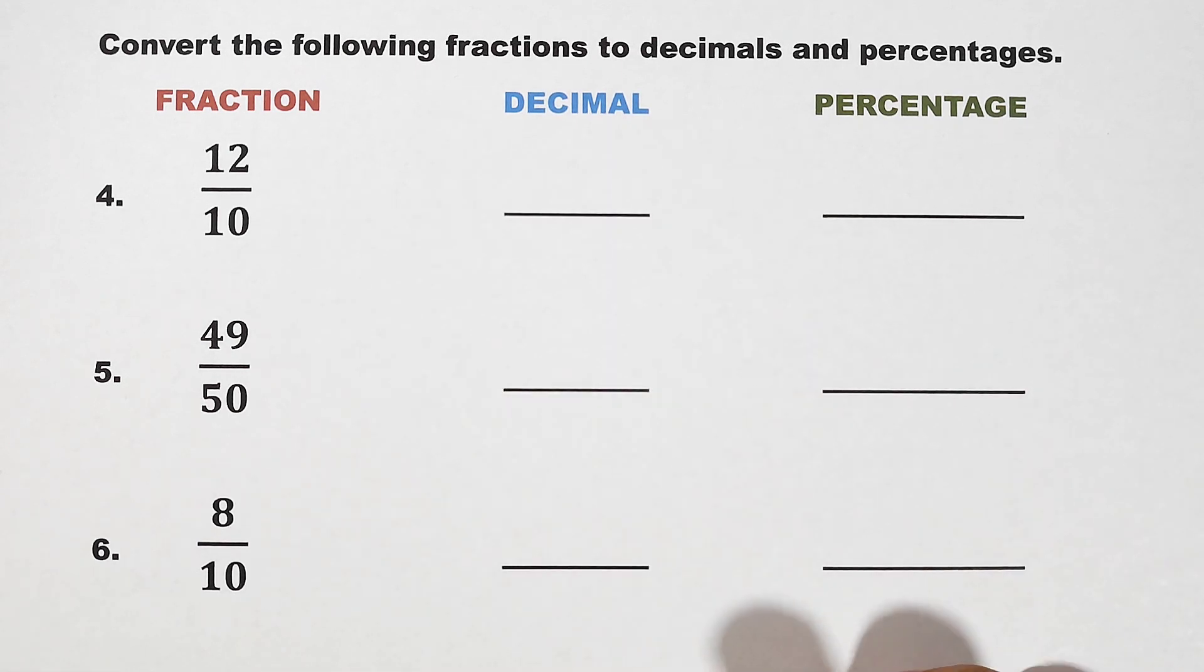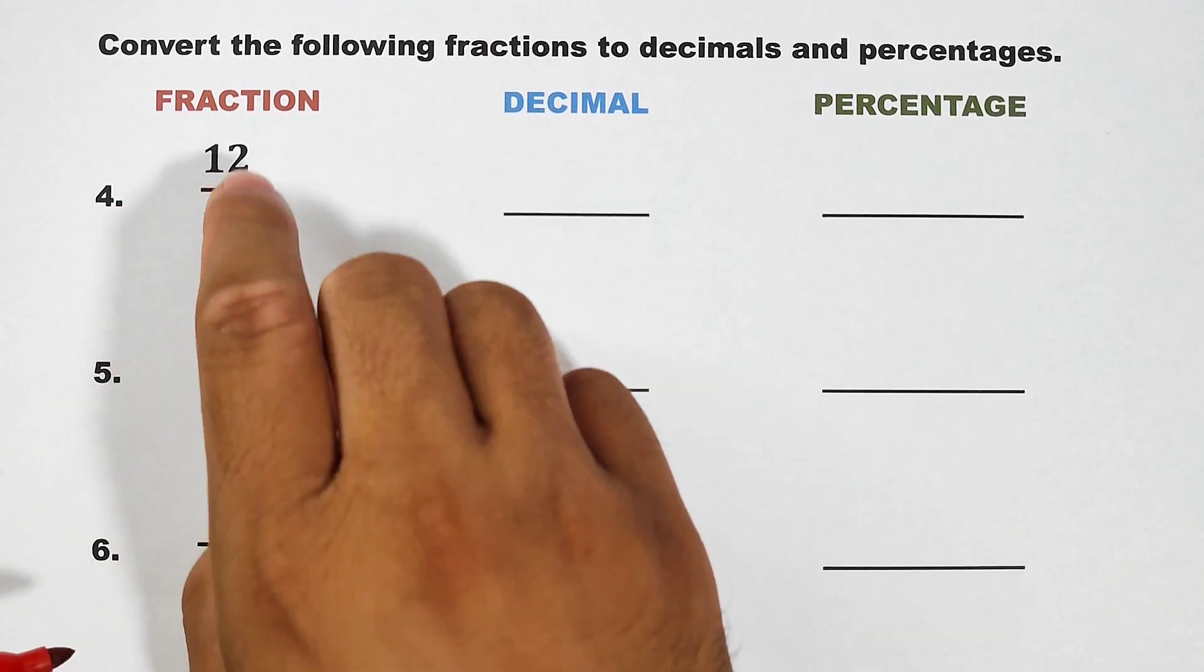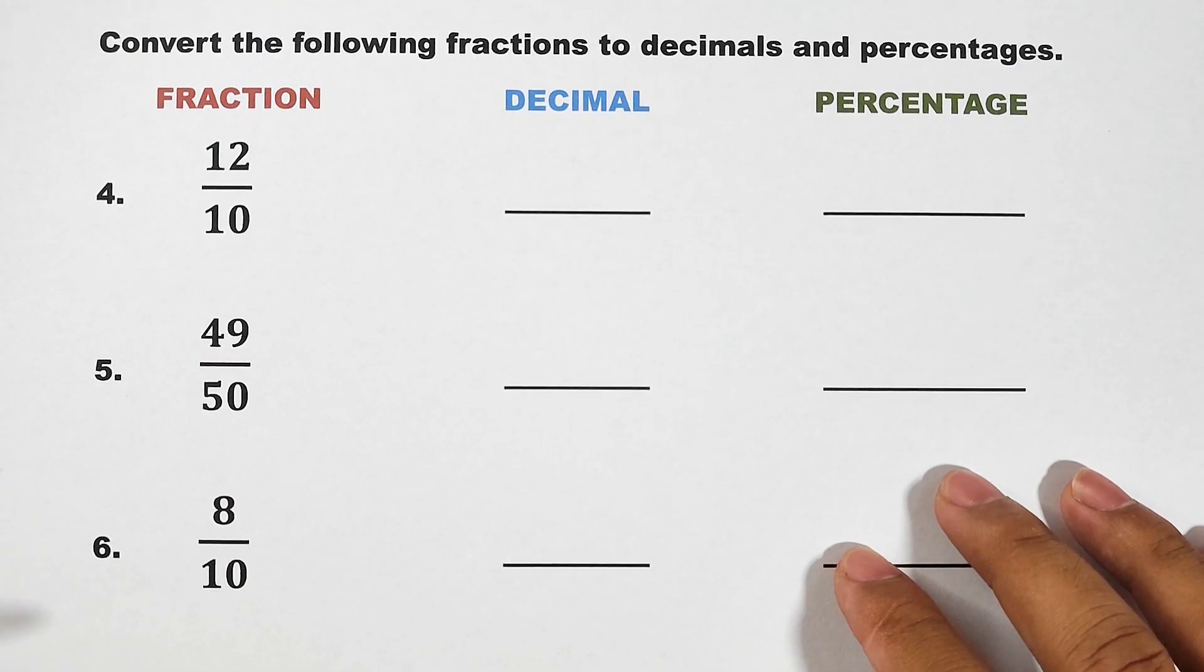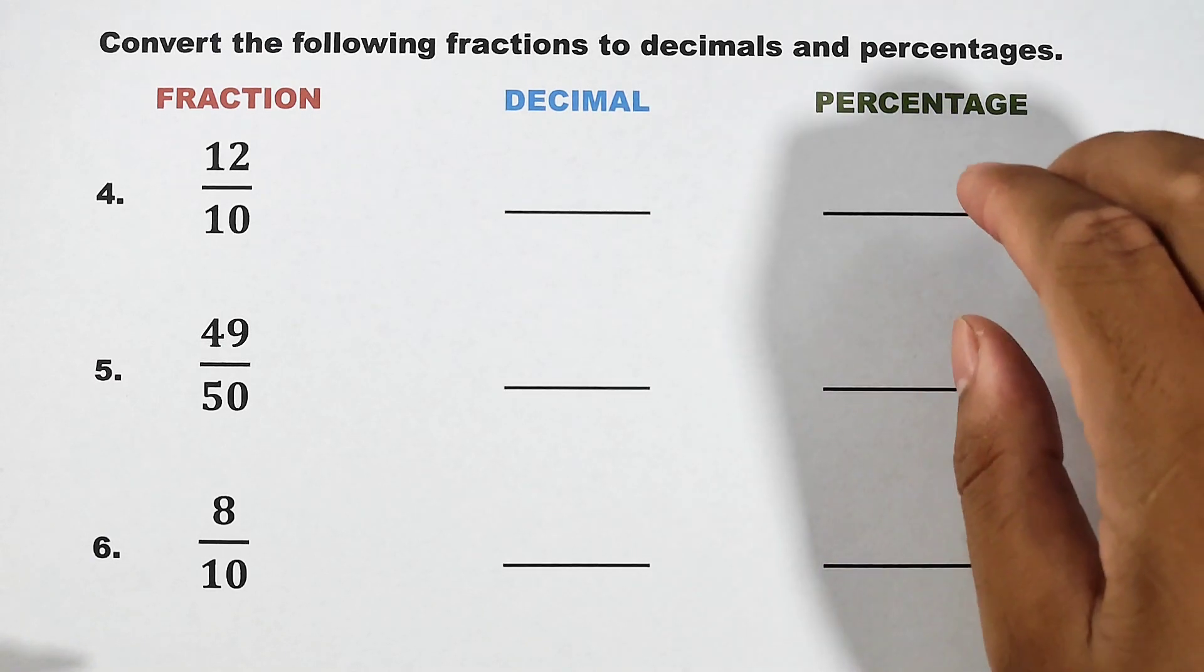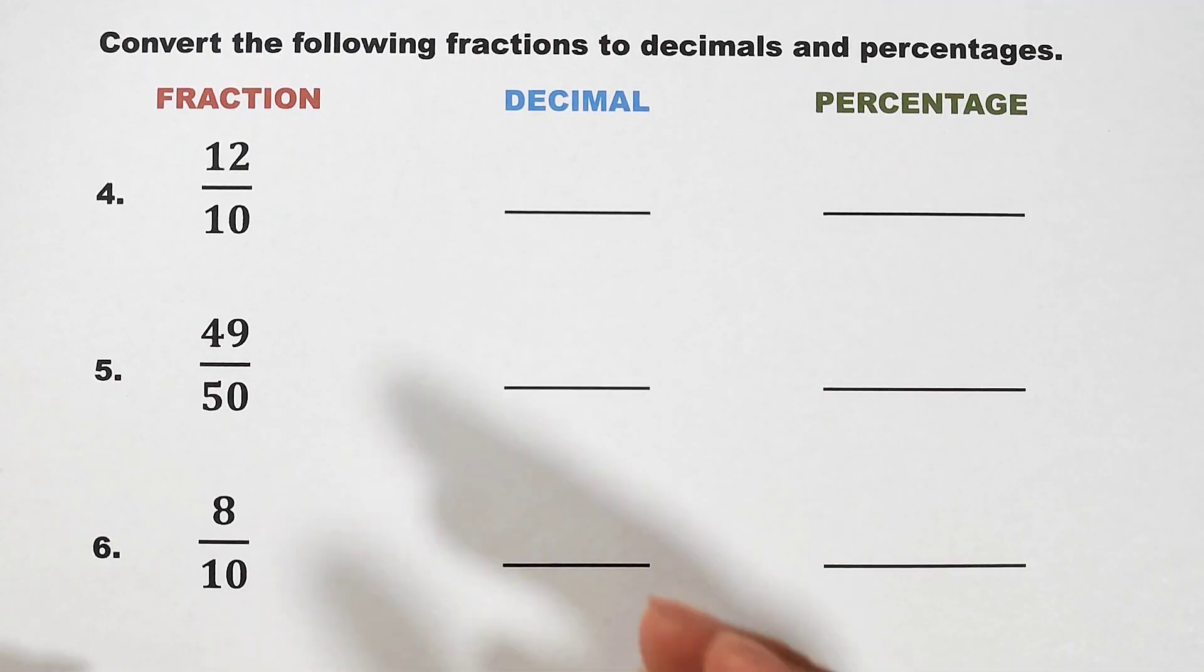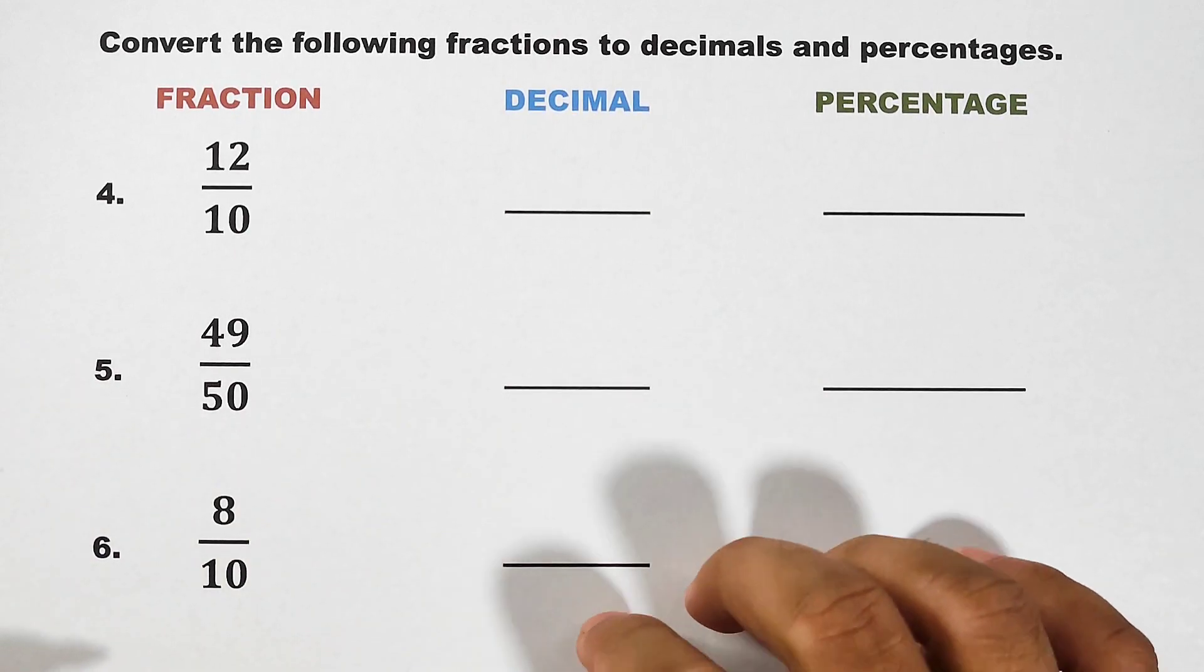Okay, let's continue. For number 4 we have 12 over 10. Now as you can see guys, this fraction is an improper fraction wherein the numerator is greater than the denominator. So we will expect a whole number or in percentage, we will expect that the answer is greater than 100%. And for the decimal, we will start with 1 point something.